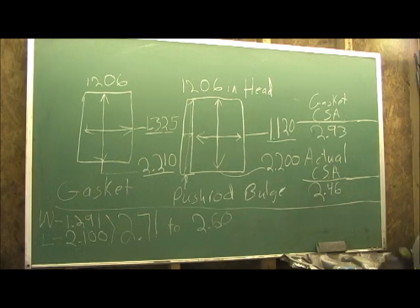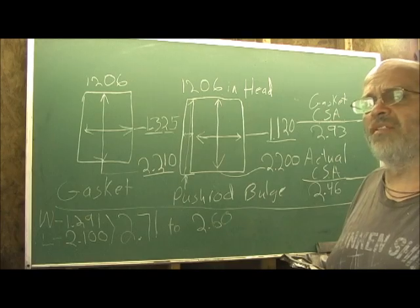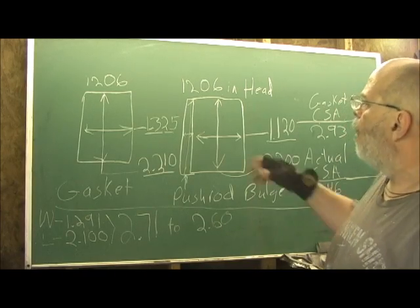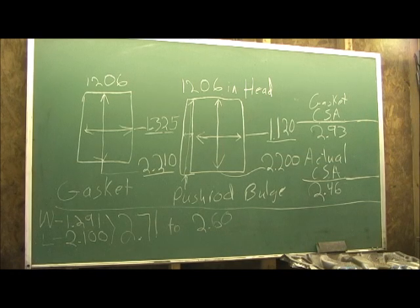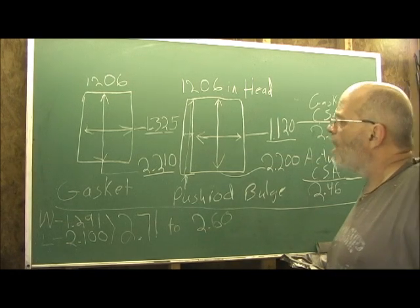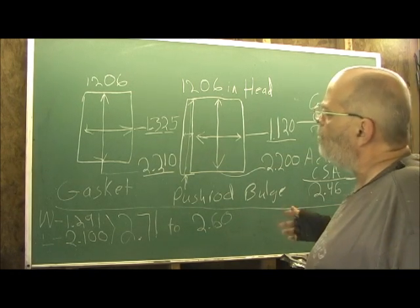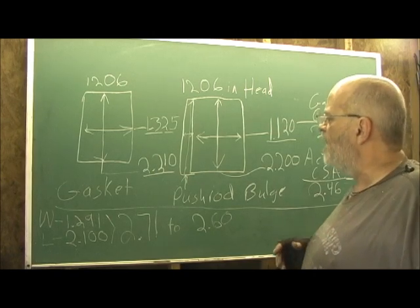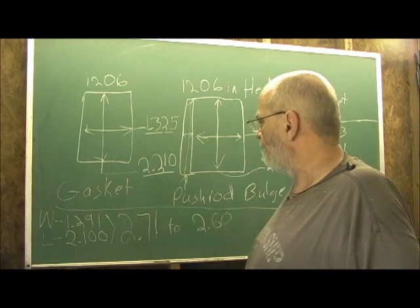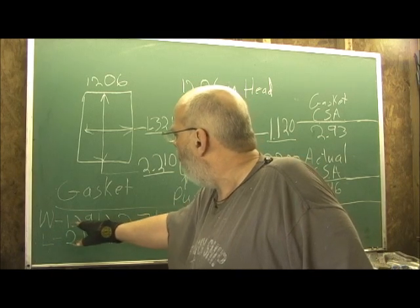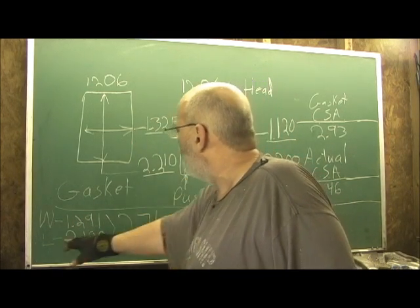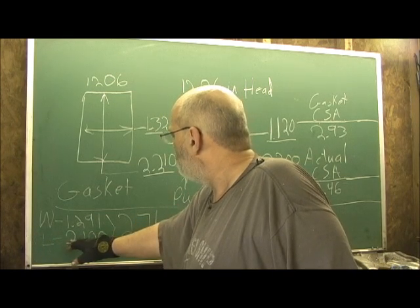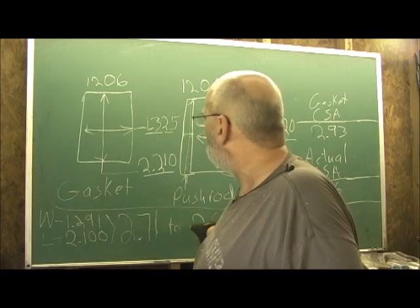Now, go to our bottom line here. Let's take a look at the intake manifold with what I've done. While I scribed the entrance of the 1206 on there, which you can plainly see, you're not really getting all that. When you go about a half inch in, these are the numbers you're going to get: the width is 1.291 from 1.325 and the length is going to be 2.100 instead of 2.200.